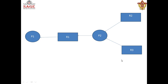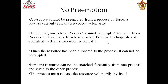Process P2 is holding R2 and R3 and waiting for R1, but R1 is allocated to P1. P1 will not release R1 unless and until it completes its execution, so P2 will not be able to complete its execution as R1 is held by P1. This condition is known as hold and wait — holding a resource and waiting for another resource.